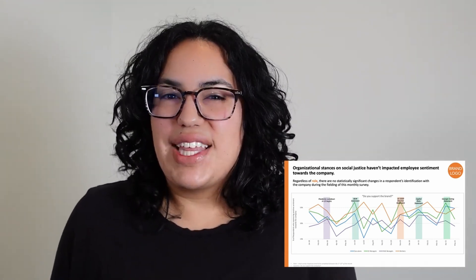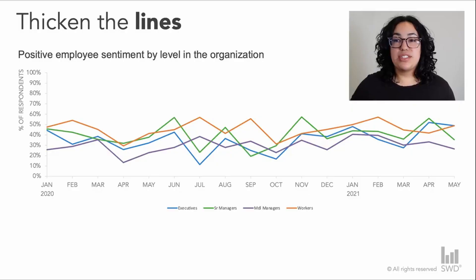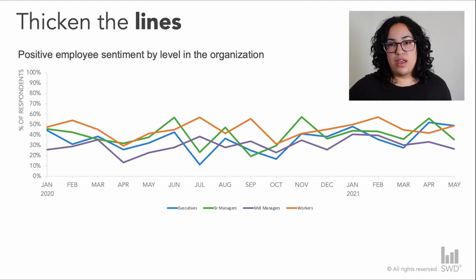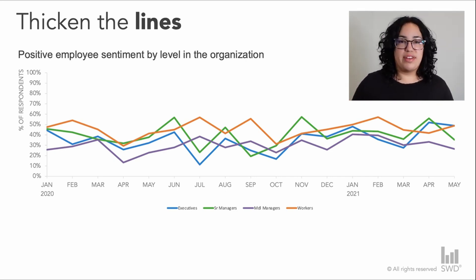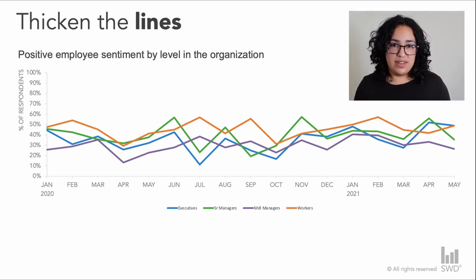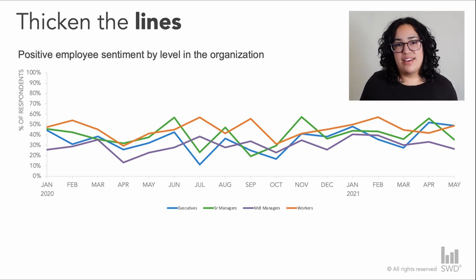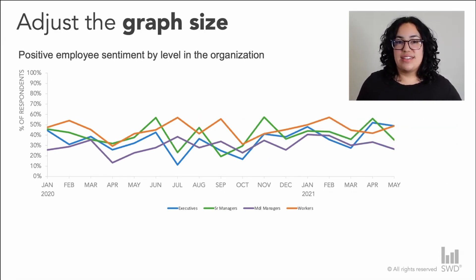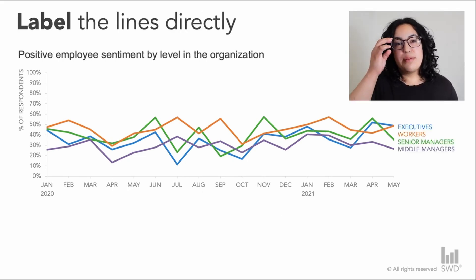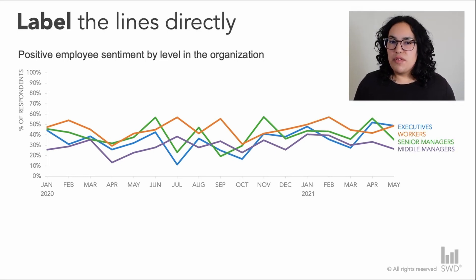Now that we have a solid structure, we can bring attention to the data. In the original, the data was almost fading to the background because so many other elements were competing for attention. I want the data to be more prominent, so I'll thicken up those lines to make them more attention-grabbing. I'm also going to adjust the graph size — there's an understandable desire to stretch a graph to fill all available space, but I encourage you to resist that urge. White space is your friend. Resizing the graph also lets me move the legend labels directly onto the lines.